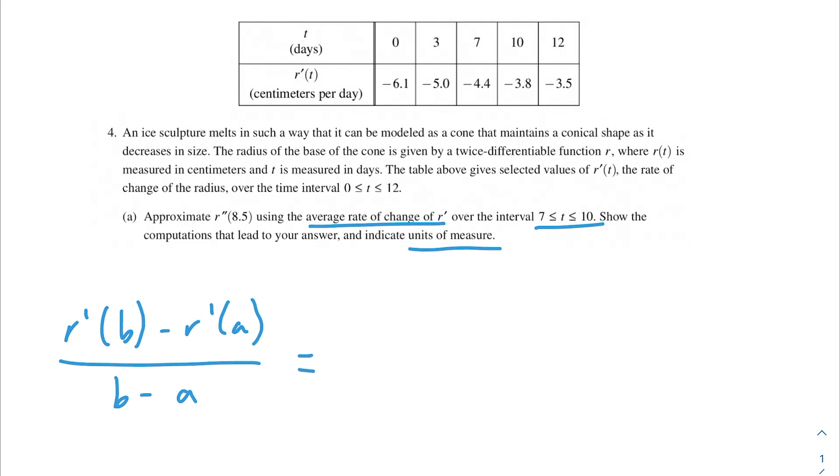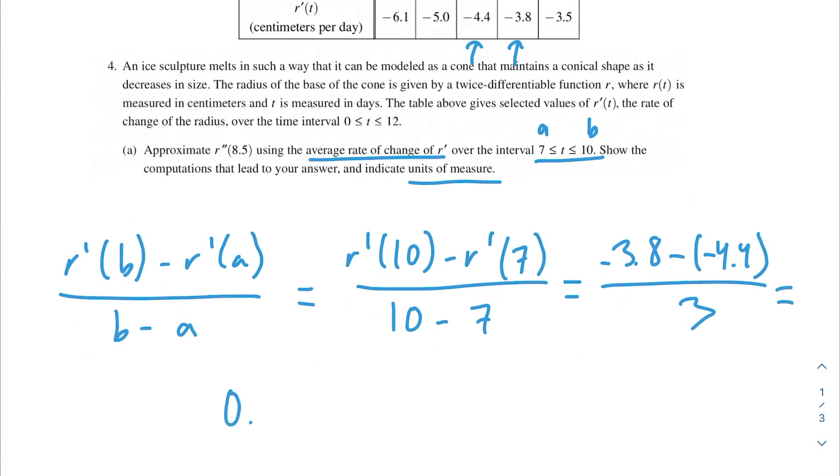So if we plug in 10 for b and 7 for a, we're going to get r'(10) - r'(7) over 10 - 7. Then we just grab r'(10) from our data table, so that would be -3.8. We grab r'(7) also from our data table, so that's -4.4. Make sure you're subtracting r'(7). This will end up being a plus because the two minuses add up to be a plus, so make sure you're not just subtracting 4.4. And then we're going to do that all over 3. So this is going to be 0.2.